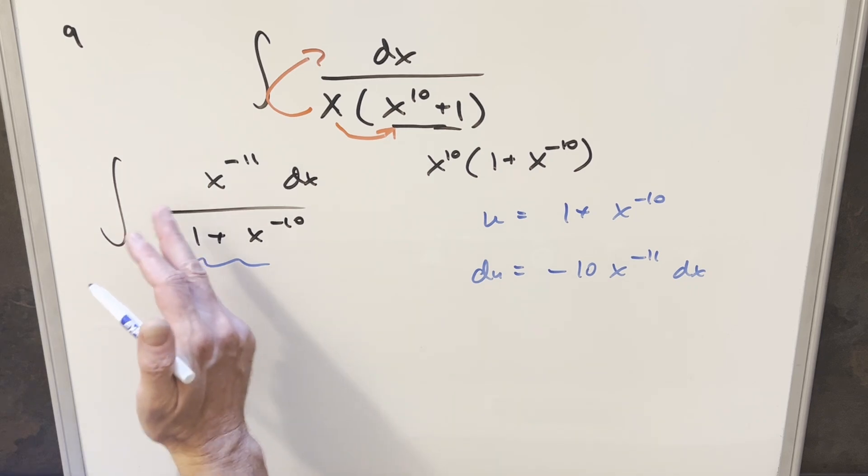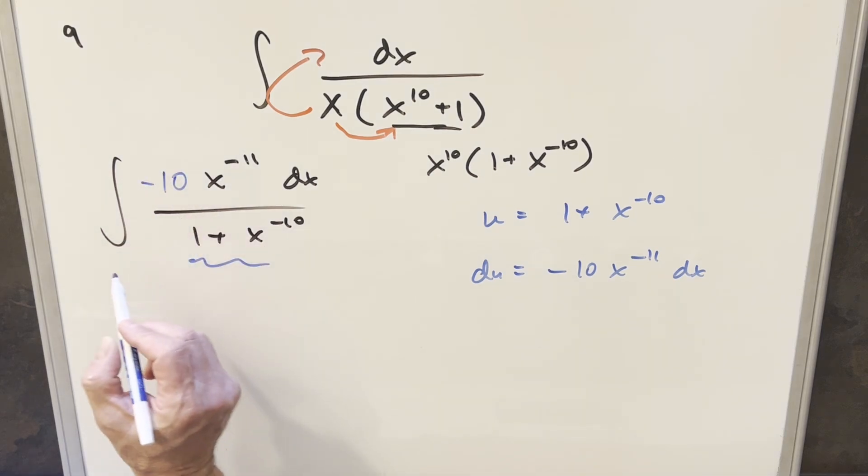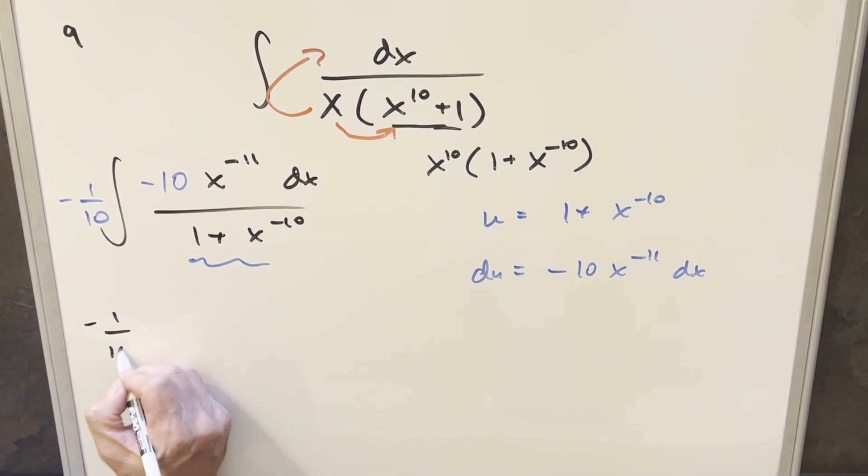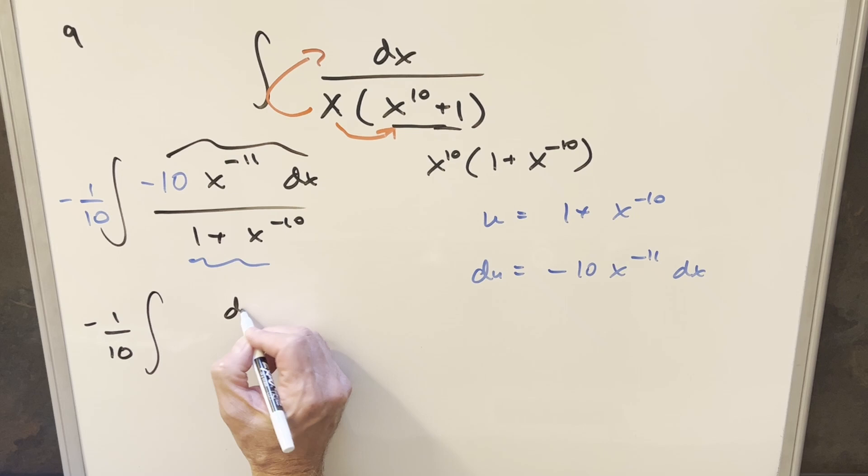So in order to make the whole numerator the du value, let's just multiply in minus 10 here. And then I'll multiply by minus 1 over 10 in front, just so I'm not changing it, or multiplying by 1. Doing the substitution, we'll still have this minus 1 over 10 in front. This here's our du, so this is going to become just du over u.